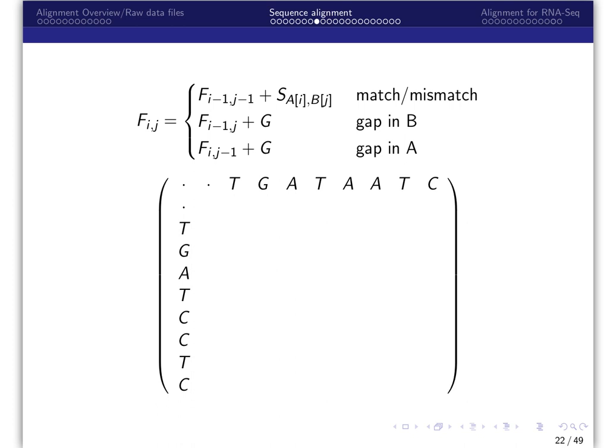Our recursion relation looks like this. We are going to move in a way whereby we take the maximum of three possible movements. Either we take a diagonal step, which corresponds to a match or mismatch, and add the value in our substitution matrix. If you come over from either above or from the left, that corresponds to a gap.